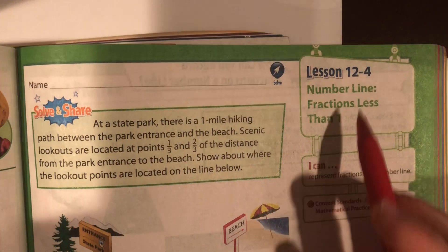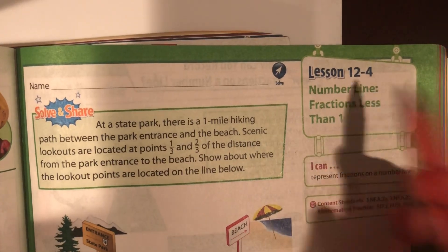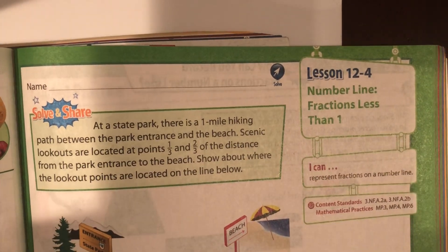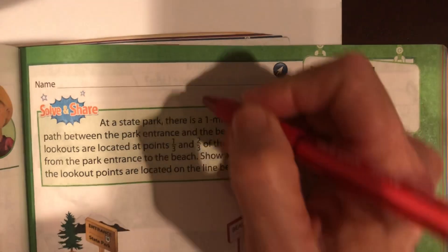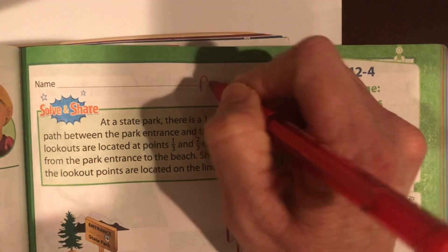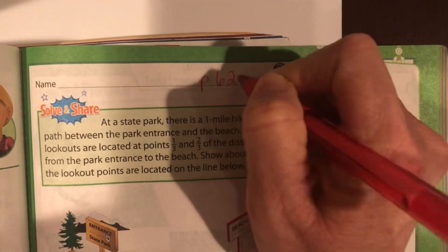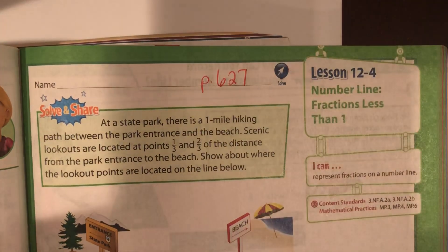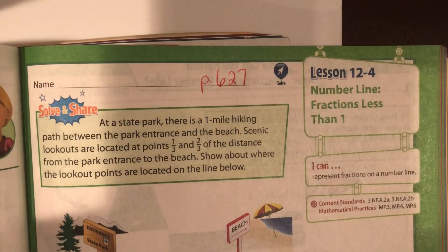Okay, this is lesson 12-4. We're going to do our workbook pages. We're going to start at page 627.